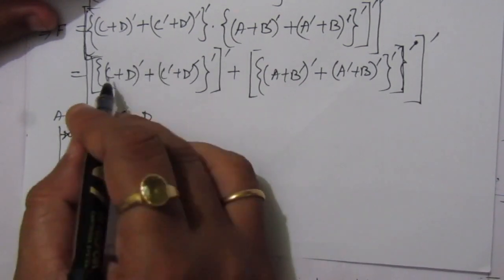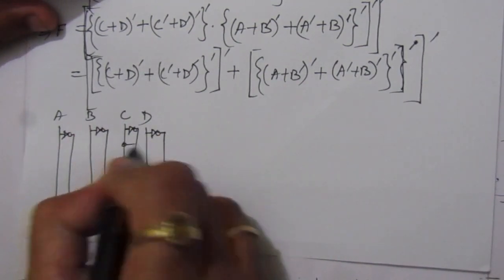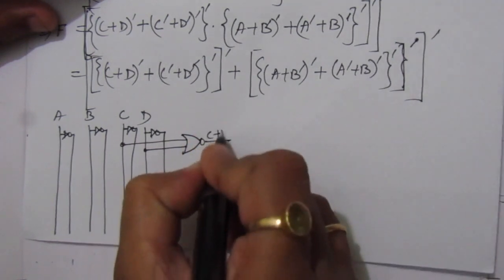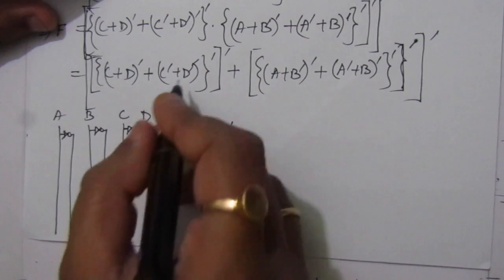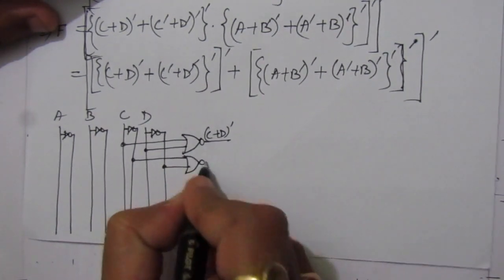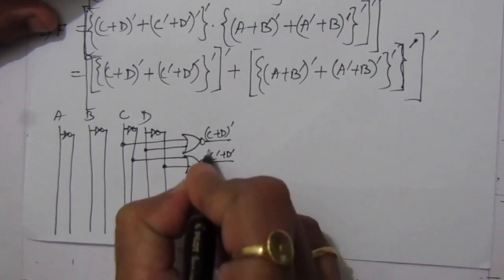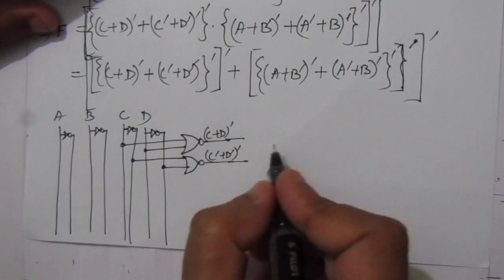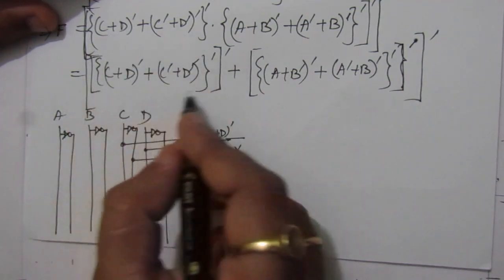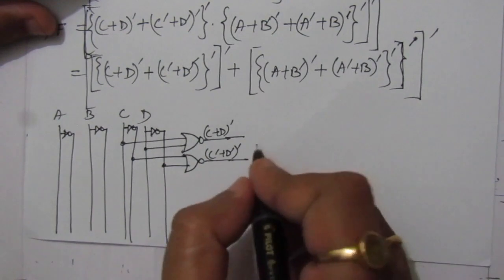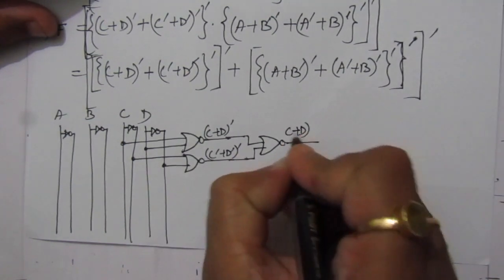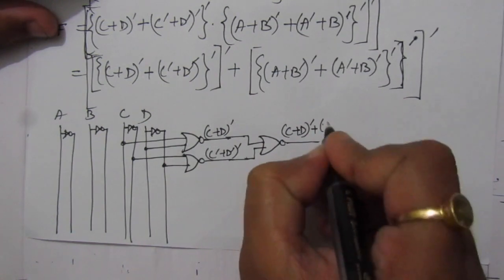We get (C + D)' from a NOR gate with inputs C and D. Then we connect C̄ and D̄ into another NOR gate to get (C̄ + D̄)'. Then we feed both (C + D)' and (C̄ + D̄)' into another NOR gate, and we get [(C+D)' + (C̄+D̄)']' — which, with one more single-input NOR acting as an inverter, gives the correct sub-expression.